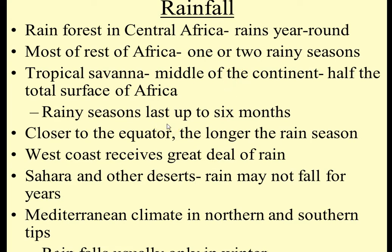Rainfall: the rainforest in central Africa rains year-round — it's a tropical rain area. Most of the rest of Africa has one or two rainy seasons. The tropical savannah in the middle of the continent covers half the total surface of Africa, and rainy seasons last up to six months, so it's extremely wet during that time.